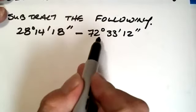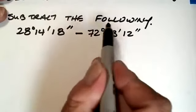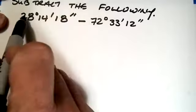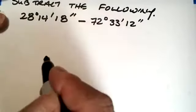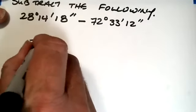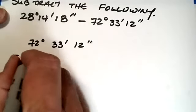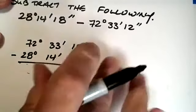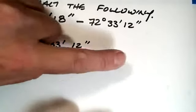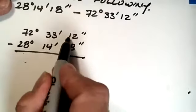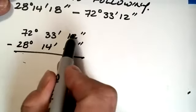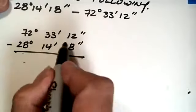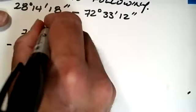Now, right off the bat, we recognize that this is a larger number in magnitude than this one. And so we're going to do that little algebraic trick where instead of doing 28, 14, 18, minus 72, 33, 12, I'm going to actually do the reverse. So to do it by longhand, I've got 72 degrees, 33 minutes, 12 seconds, minus 28 degrees, 14 minutes, 18 seconds. And then the result will have a negative sign.